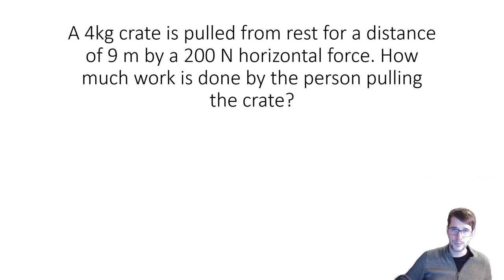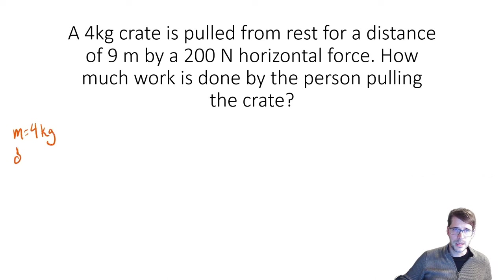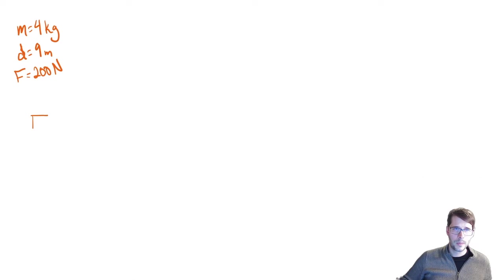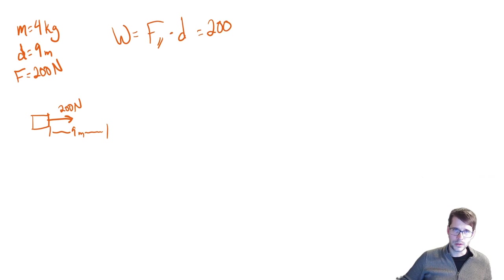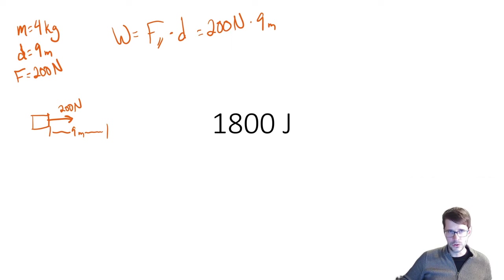Next, we've got some written problems. A 4-kilogram crate is being pulled from rest a distance of 9 meters by a 200-newton horizontal force. We want to know how much work is done by the person pulling the crate. It's being pulled by a 200-newton force along a path of 9 meters. Using the equation work equals force parallel to direction of motion times distance, we get 200 times 9, which is 1,800 joules of energy added to the object.